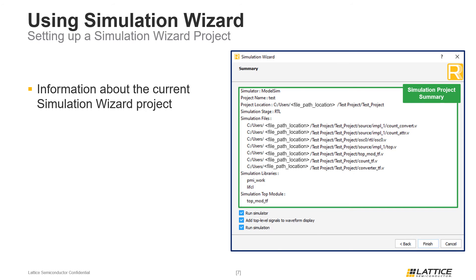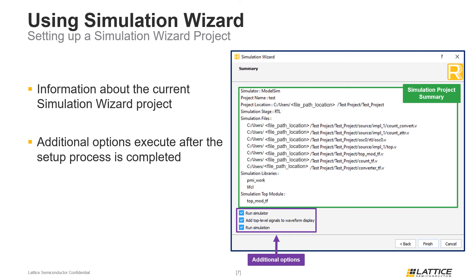The bottom section of this page contains a few additional options that control what happens after users finish the Simulation Wizard project setup. The first option, Run Simulator, launches the selected simulation tool if enabled. The second option, Add Top Level Signals to Waveform Display, automatically adds the ports from the test bench module to the waveform display in ModelSim if enabled. The third option, Run Simulation, runs the TCL command to initialize the generated Simulation Wizard script, which automatically compiles and runs a simulation. All three options are enabled by default; to disable one, toggle the checkbox next to its name. If all three are enabled, the simulation tool will automatically launch and run the simulation. To finish, select the Finish icon from the bottom of the window.